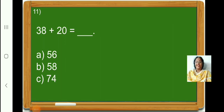Now, children, let us add 38 plus 20. First we will add the numbers in the 1's place. 8 plus 0 is 8. Now, let us add the numbers in the 10's place. 3 plus 2 is 5. Therefore, 38 plus 20 is equal to 58. So, children, let us put a tick on option B, 58.